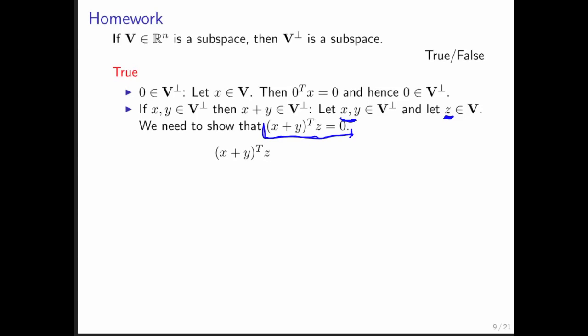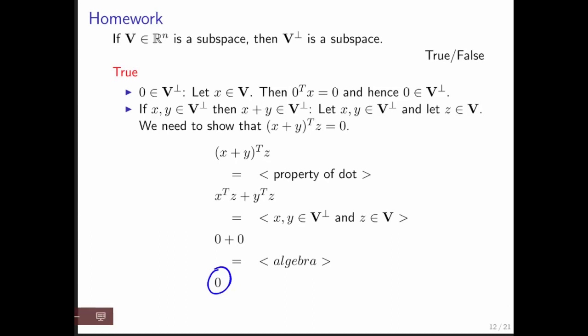What we need to show is that x plus y is perpendicular to z. In other words, that the dot product of the vector x plus y with the vector z is 0. Now, let's work through that. First thing we do is distribute, and then we recognize that since x and y are in V perp and z is in V, each of these equals 0. But what that means is that x plus y dot product with z is also equal to 0 for all vectors z in V, and therefore x plus y must be in V perp.